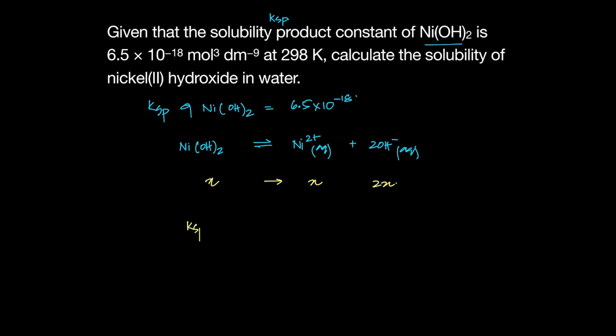And KSP would be nickel ions and hydroxide ions squared. And nickel is X and hydroxide is 2X. What is X? X is solubility. X is how much dissolved. So here 2X squared, so what do I get? I get 4X³.